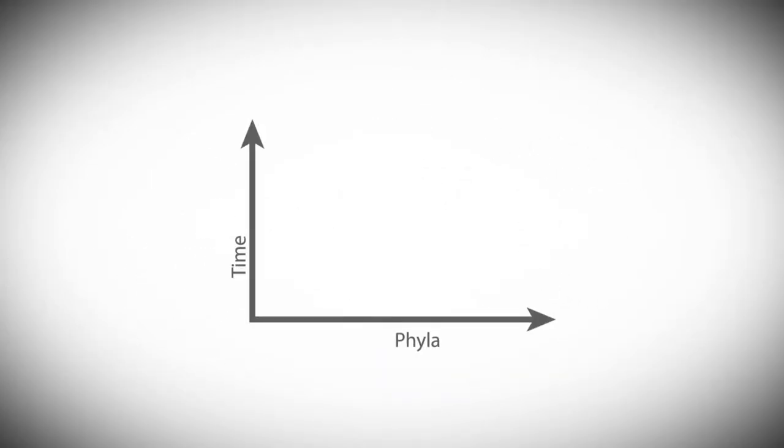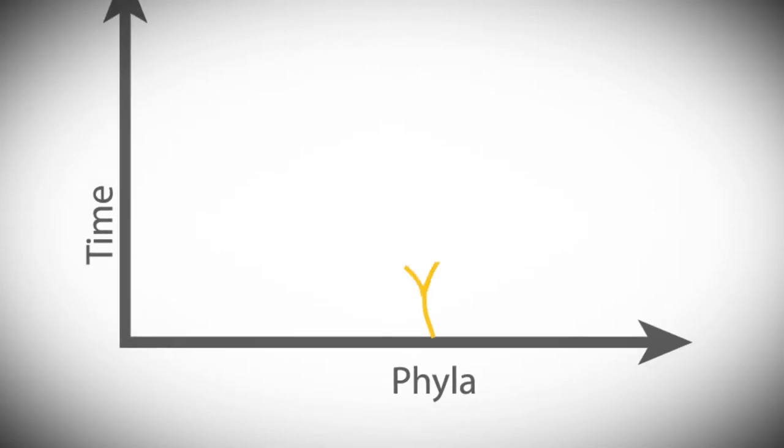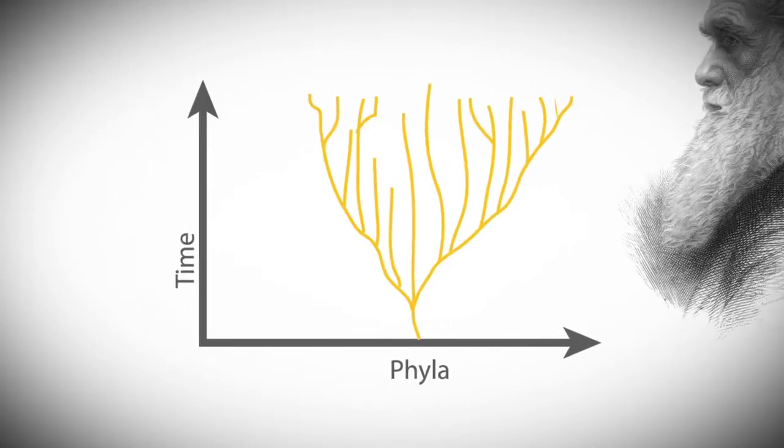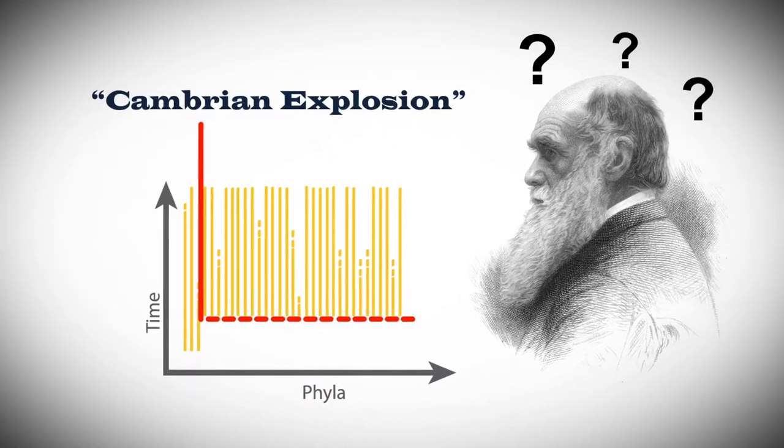If evolution were true, the fossil record should show one type of animal life in the lowest layers, then two, then four, and so on. But Darwin himself had a difficult time explaining what we now call the Cambrian Explosion of Life.